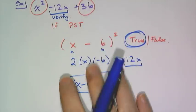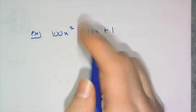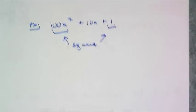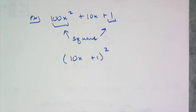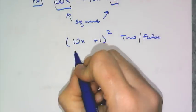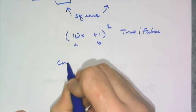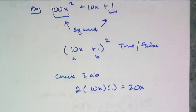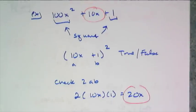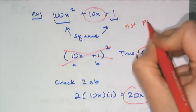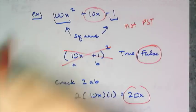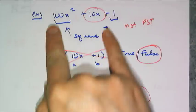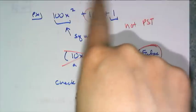Don't assume it is — case in point, this next example. If I have 100x squared plus 10x plus 1, that's a square and that's a square, so the candidate factored form is (10x plus 1) squared. But checking: 2 times 10x times 1 is 20x, and 20x is not what we were given. So this is false — it's not a perfect square trinomial, and in fact it can't be factored at all. It's prime over the integers.